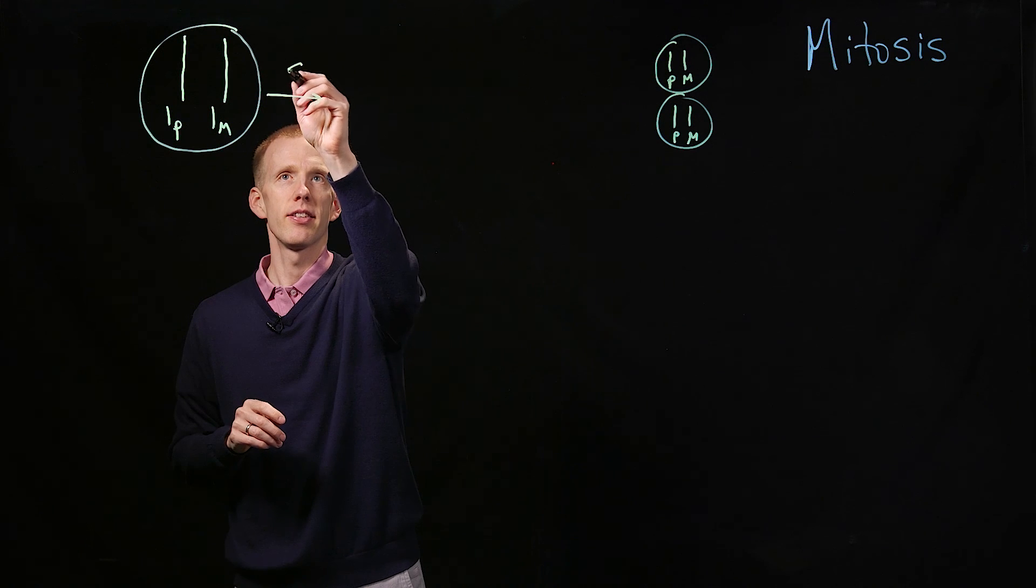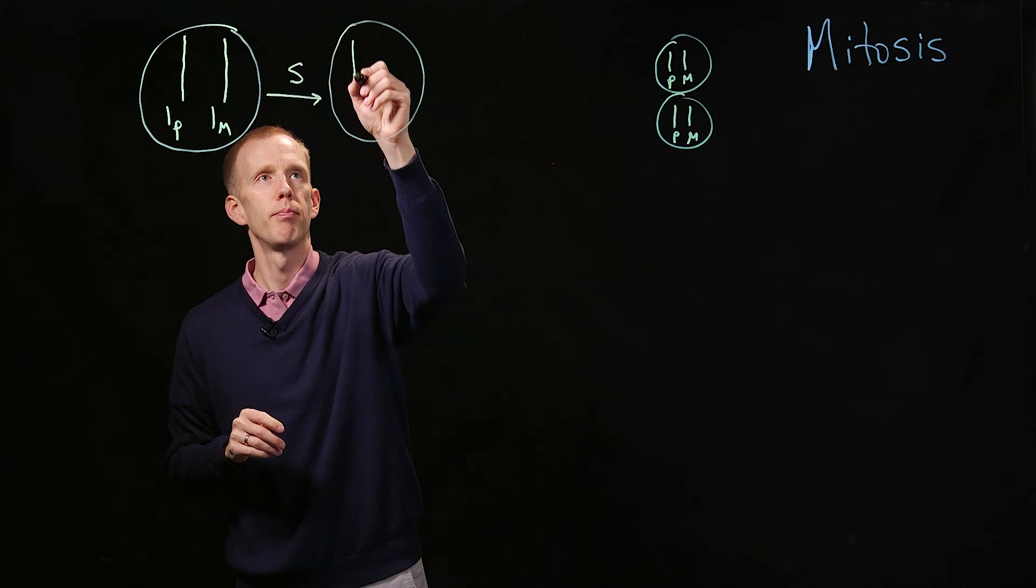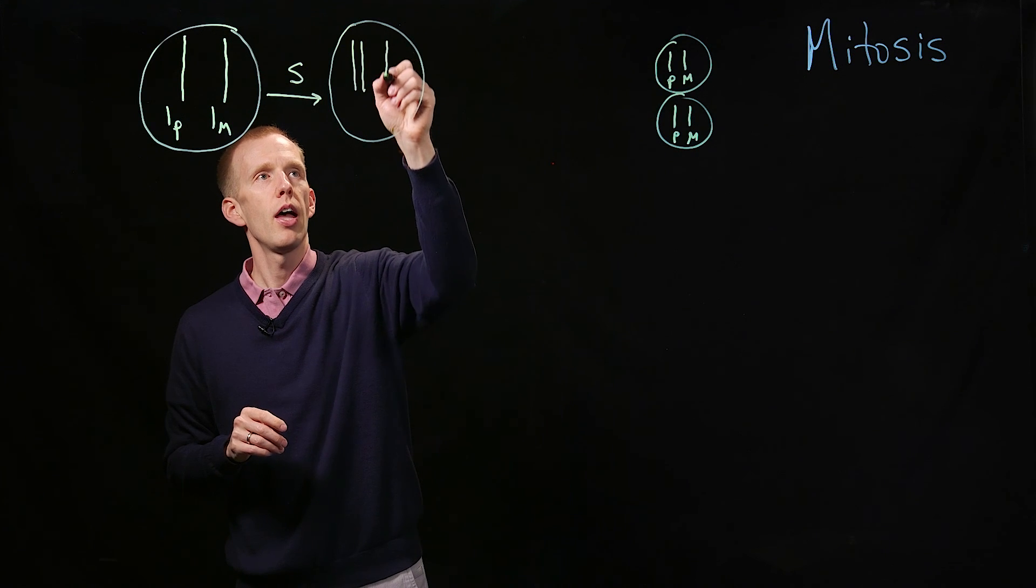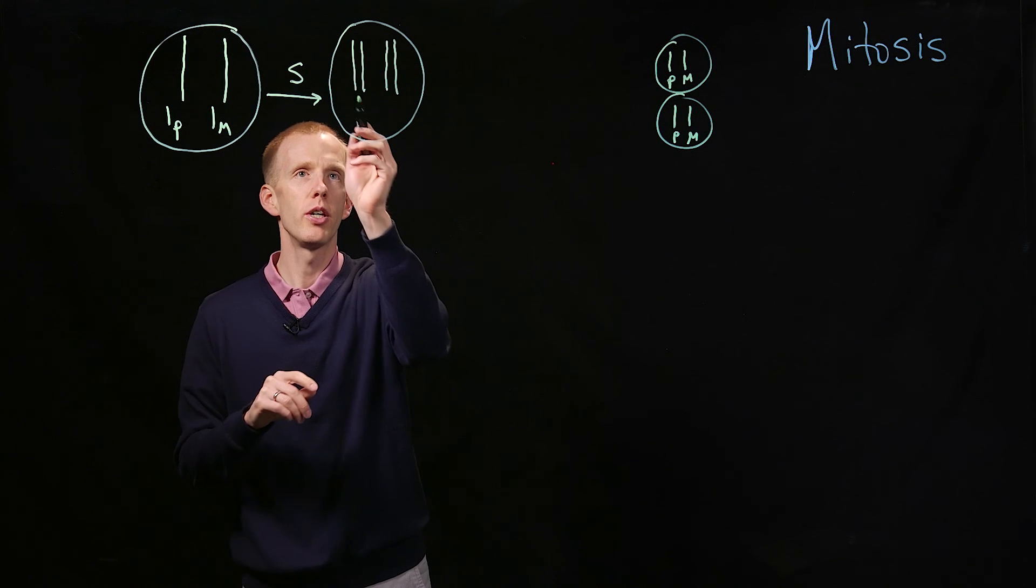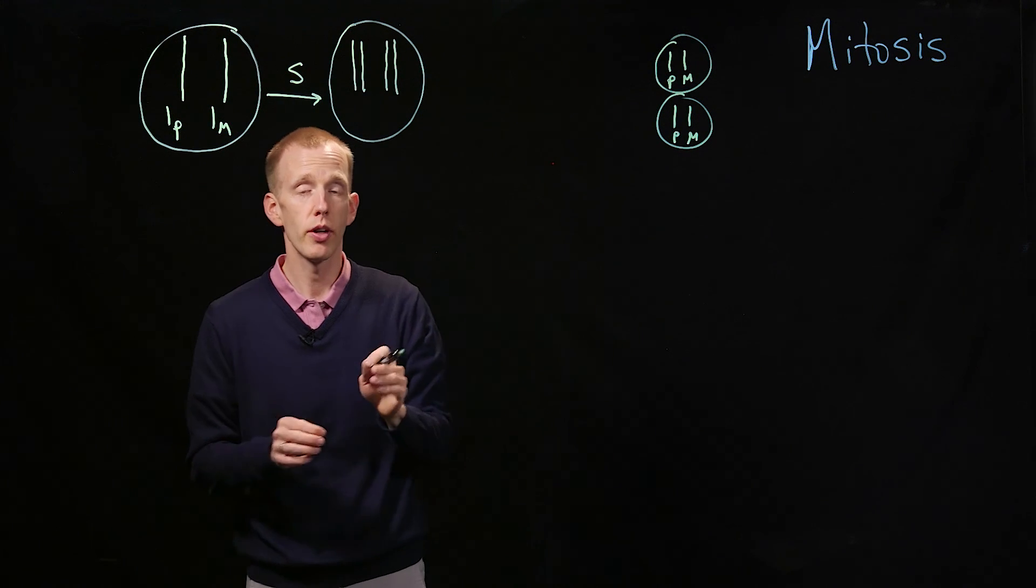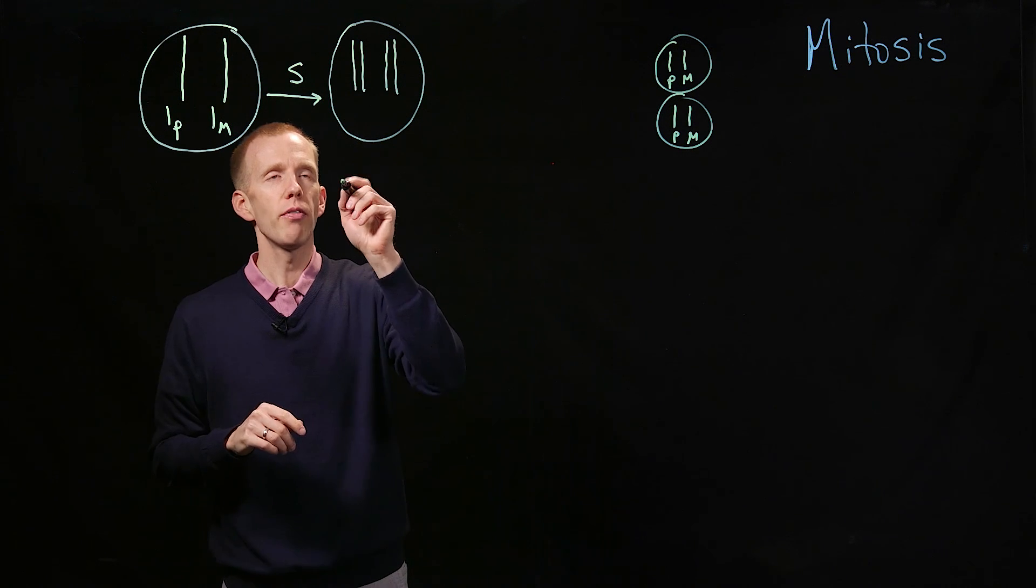During DNA synthesis, each of those chromosomes gets copied. And it's at this point that we refer to the two chromosomes, even though each of these lines represents a double-stranded molecule of DNA, just like they did over here. After synthesis.